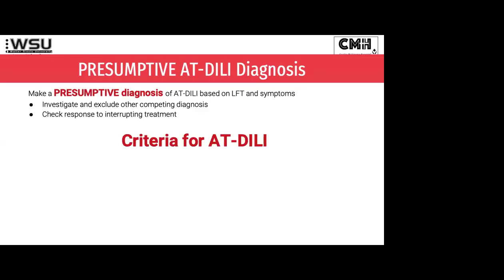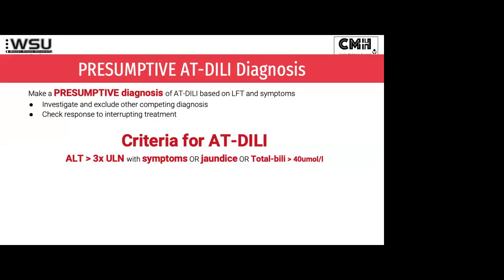The criteria has shifted slightly. To diagnose drug-induced liver injury, you look at your ALT — the ALT is the be-all and end-all. Not the AST; ignore the AST. Ignore the ALP and gamma-GT. You want to look just at the ALT to make your diagnosis. The first criteria is an ALT more than three times the upper limit of normal. Here in our department, the upper limit of normal is 35, so that means an ALT of over 105, and the patient has symptoms — they're unwell. Or the total bilirubin is over 40.